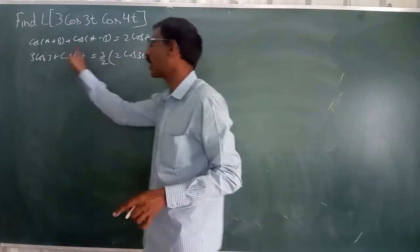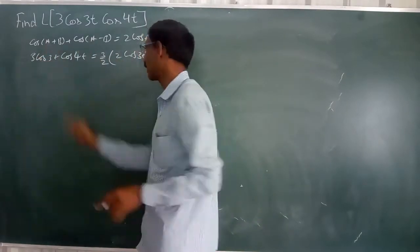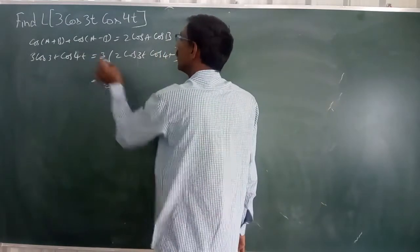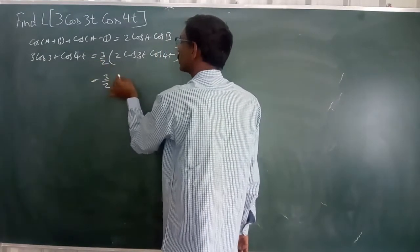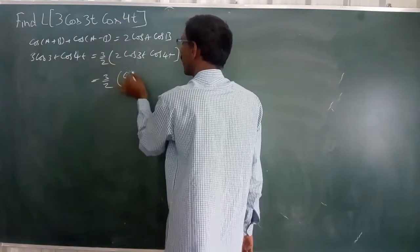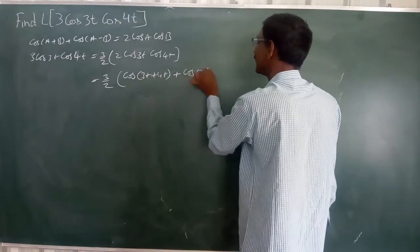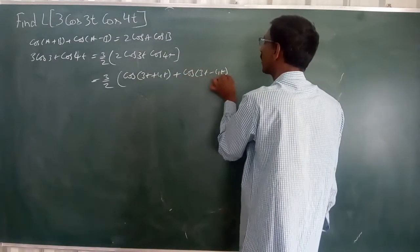I will go back to like this. This is clear. Now, write it down 3 by 2. Cos A plus B means we have to write that. Cos 3 theta plus 4 theta. Plus cos 3 theta minus 4 theta. Can I write that down like this?